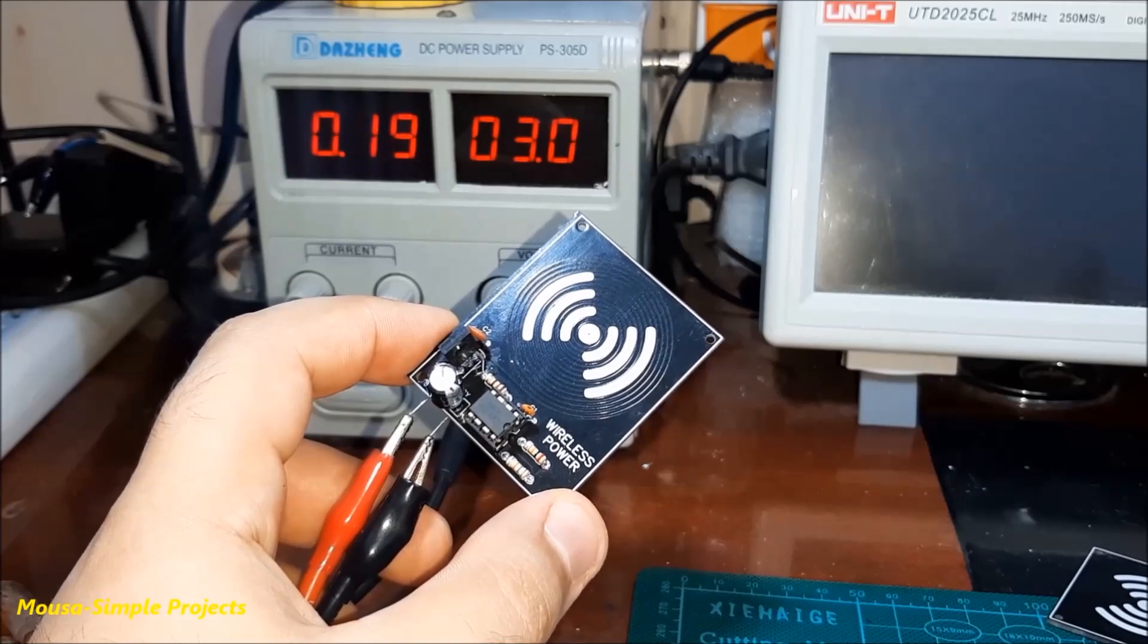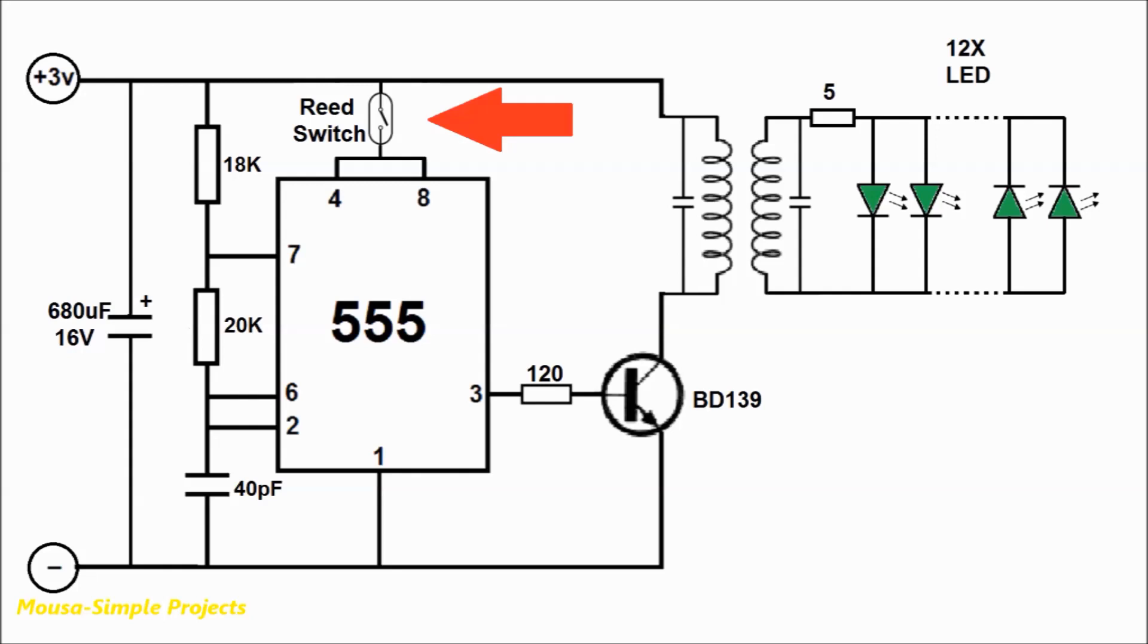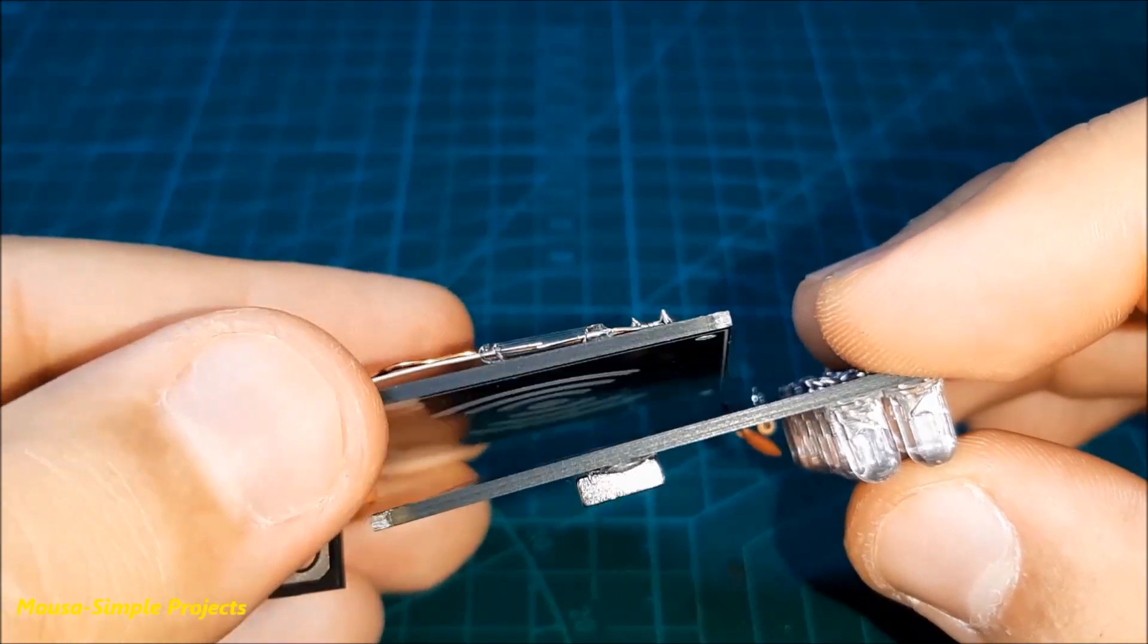To solve the problem of drawing current in standby state, I used a reed switch and neodymium magnet. In this case, the transmitter switches on just when the receiver coil is attached.